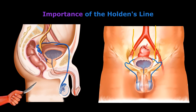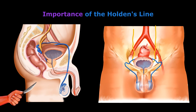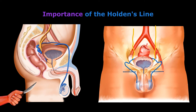What is the importance of Holden's line? When the urethra is injured in the perineum, urine may extravasate into the interval between the deep and membranous layers of the superficial fascia. This urine can pass up into the anterior abdominal wall and from there into the upper part of the thigh. However, because of the firm attachment of the superficial fascia at Holden's line, urine is prevented from descending into the thigh beyond this line.